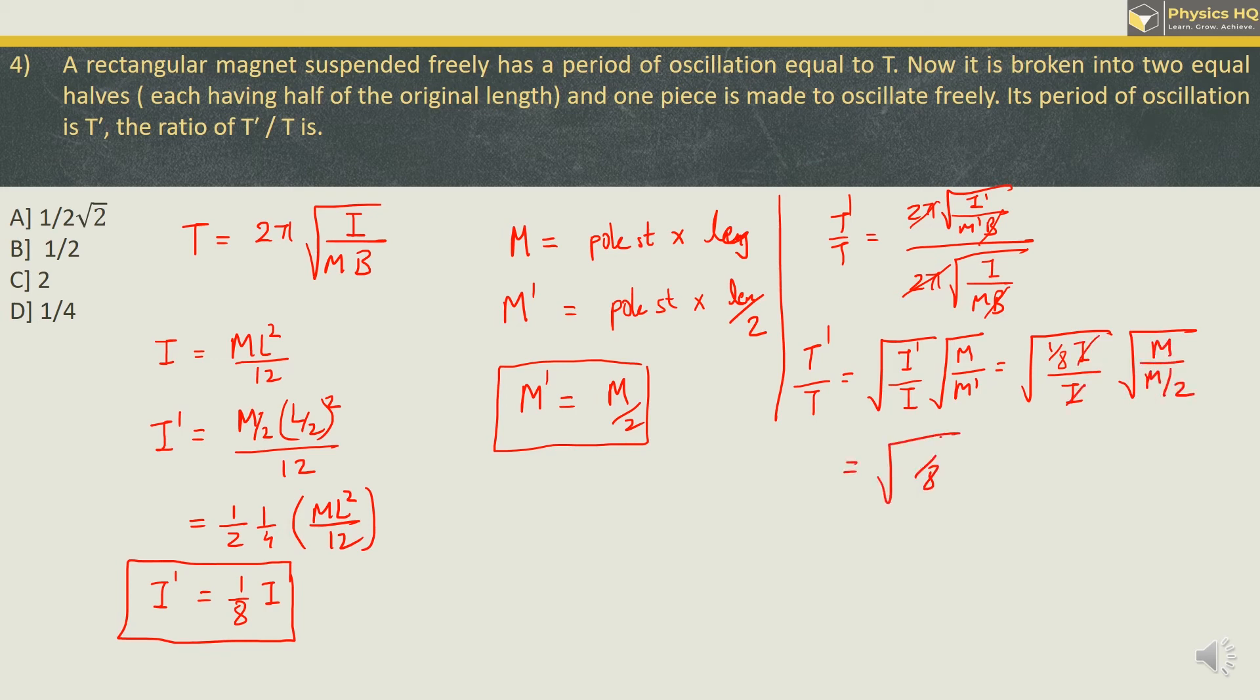So what we are left with is 2/8 which is equal to root of 1/4 that is equal to 1/2. So we got the ratio of T' / T is equal to 1/2. The correct option over here is option B. Hope you all understood this.